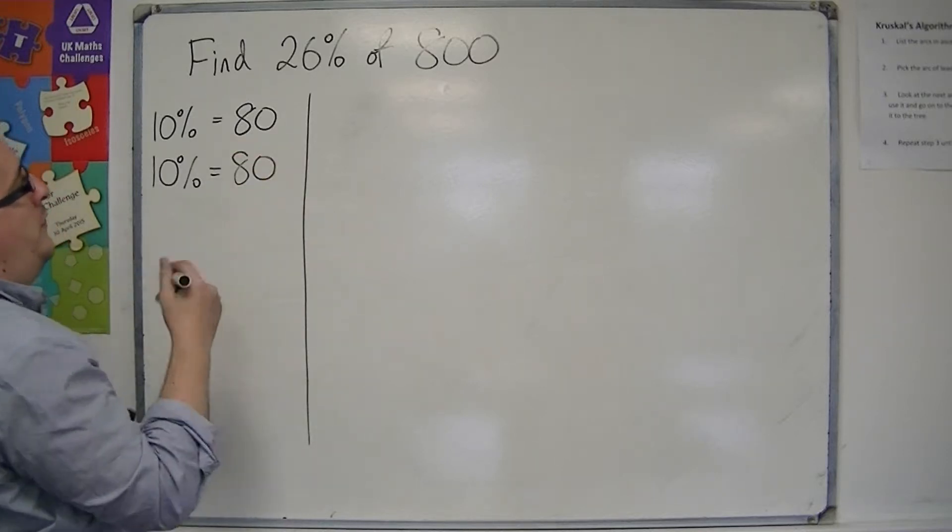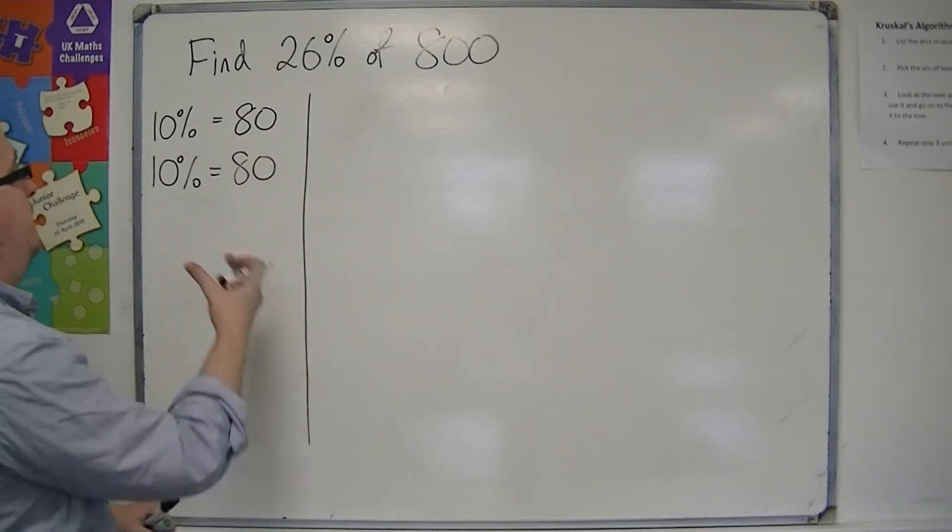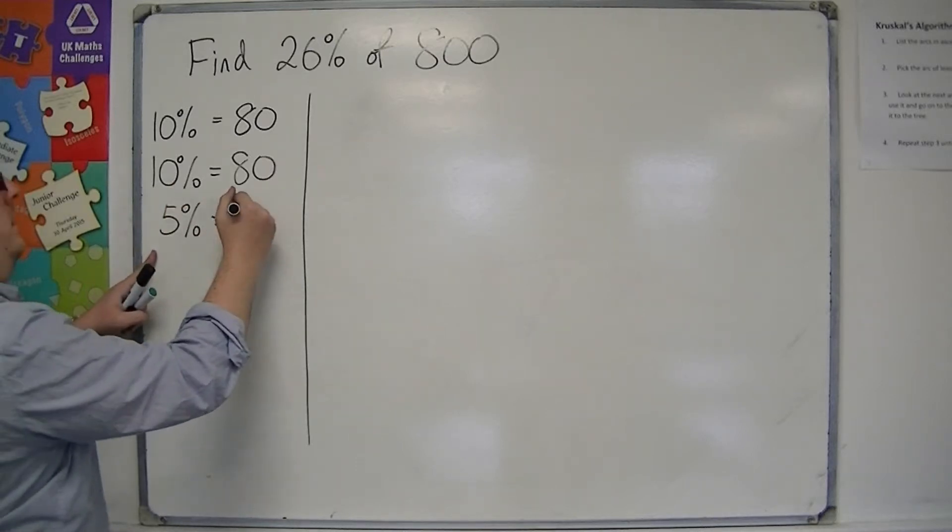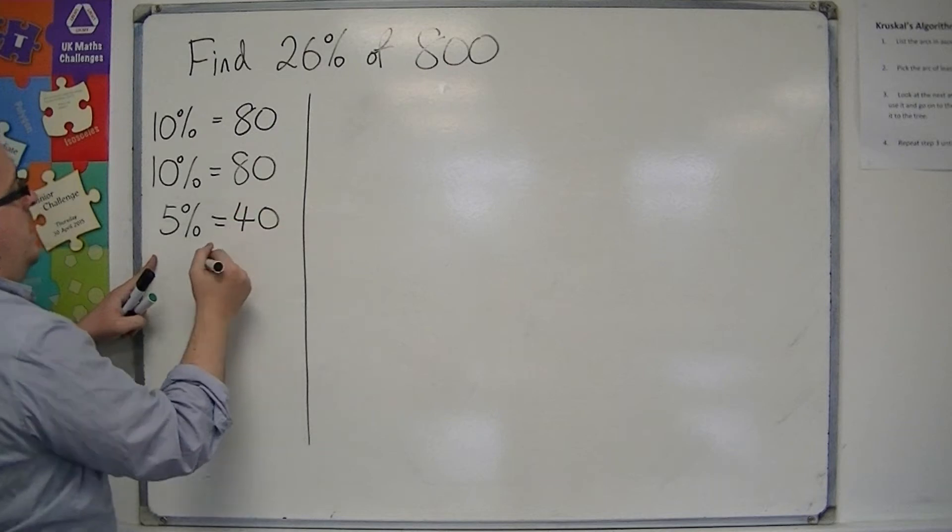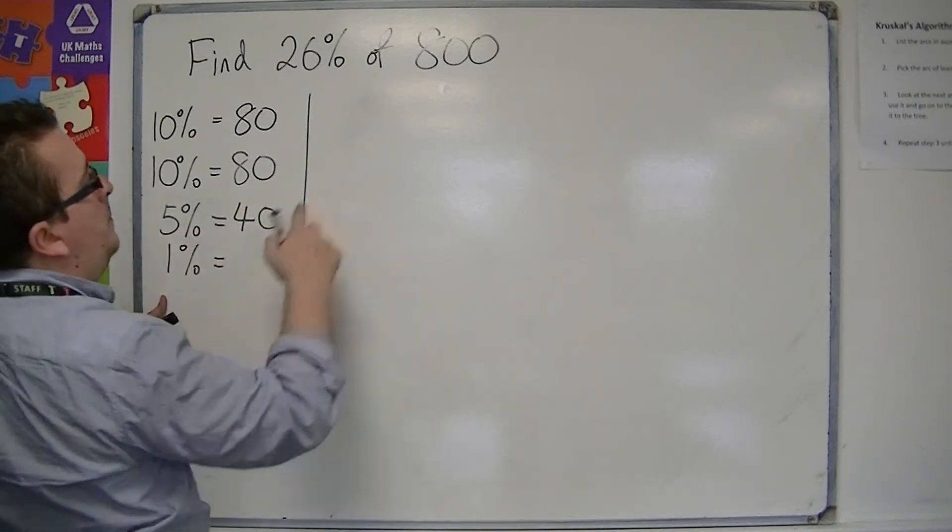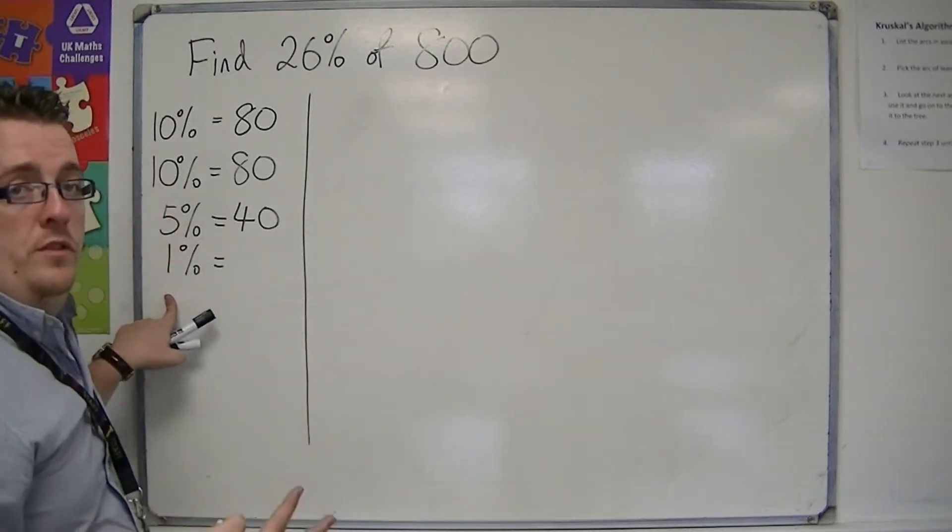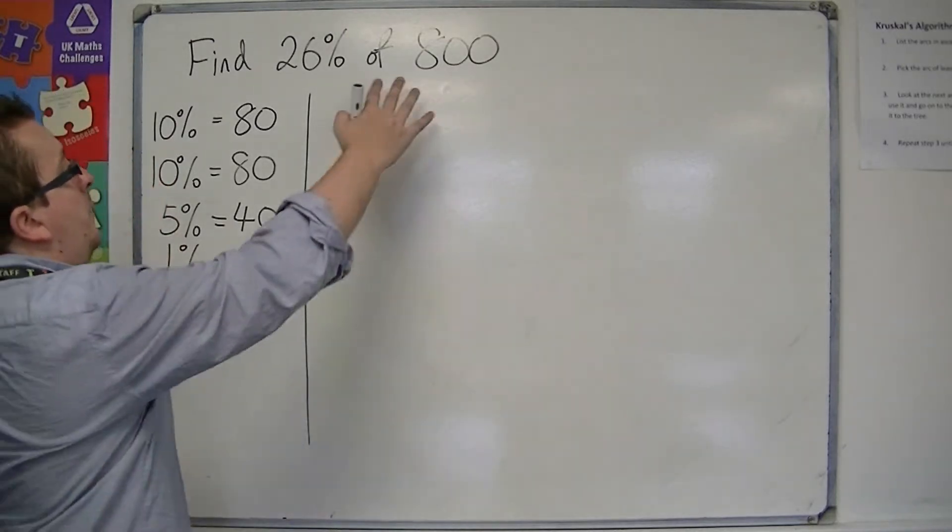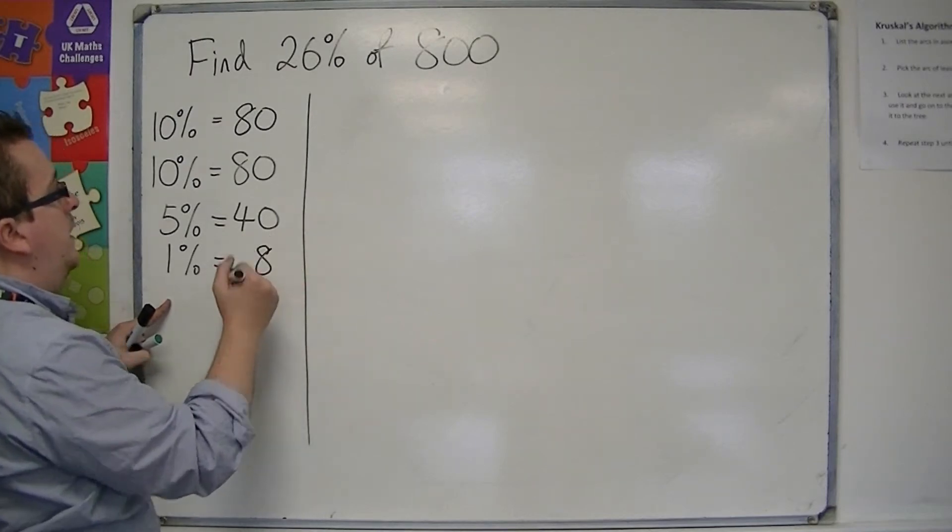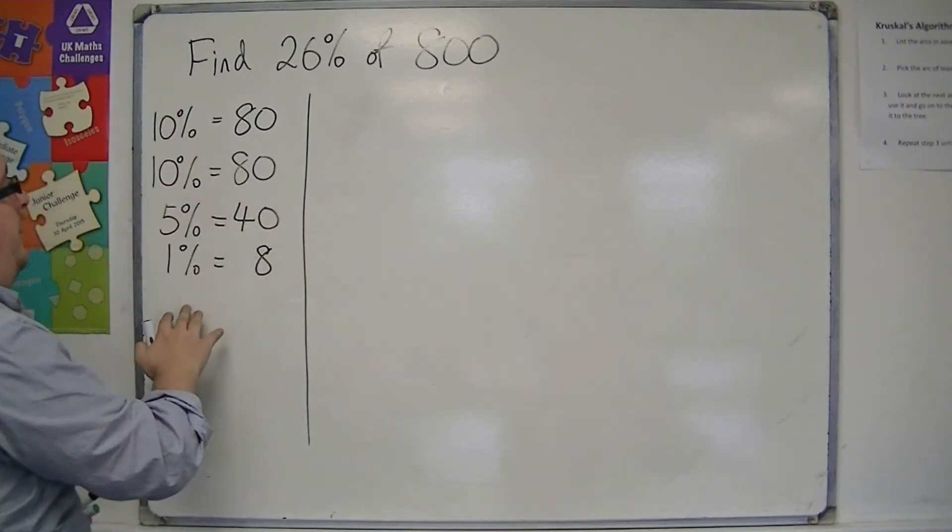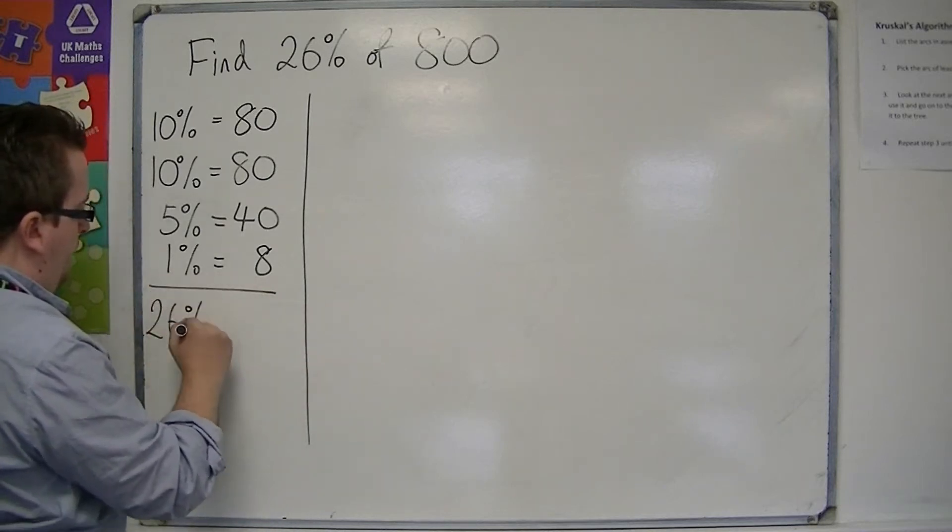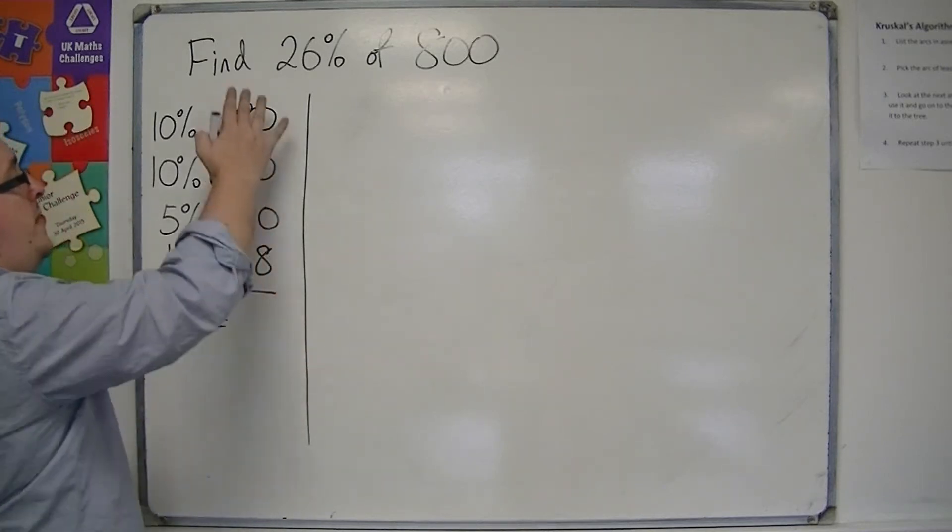But we'd also like to find this 6%. So 5% would be half of the 10%, so that's 40. And I need another 1%. To find 1%, I divide by 100, because that's what percent means. So 800 divided by 100 is just 8. If I add up this left-hand side, I've got 26%. If I add up the right-hand side, I get 8, 4, 12, 20.